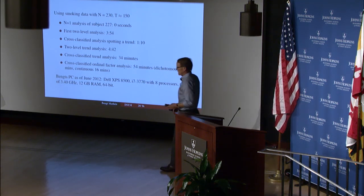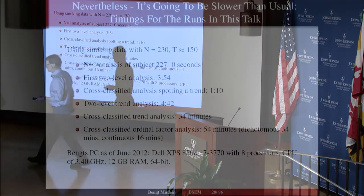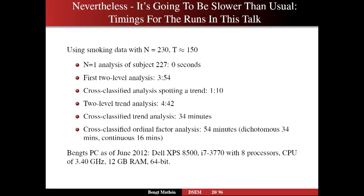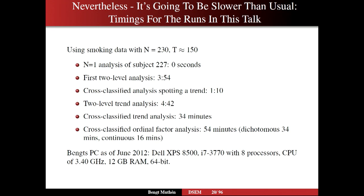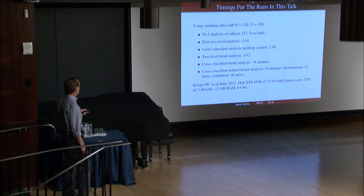Nevertheless, even though M+ Bayes is faster than other Bayes programs, it's going to take a lot longer doing DSEM modeling than the computing times you're used to. The data I'm going to use has 230 people and about 150 time points. An N=1 analysis takes zero seconds. But a two-level analysis immediately jumps up to almost four minutes, and a cross-classified analysis takes a little over one minute.